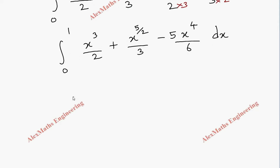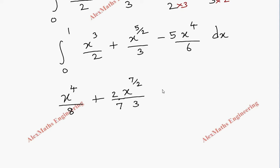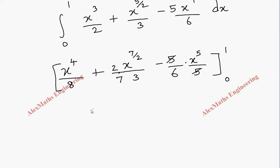Now we integrate: x³ integrates to x⁴/4, divided by 2 gives x⁴/8. Then x^(5/2) integrates to x^(7/2), divided by 3 times (2/7) gives x^(7/2)·2/21. Minus 5/6 times x⁵/5 — the 5s cancel. The limit is from 0 to 1. Substituting the upper limit gives 1/8 + 2/21 − 1/6. Substituting the lower limit, everything becomes 0.